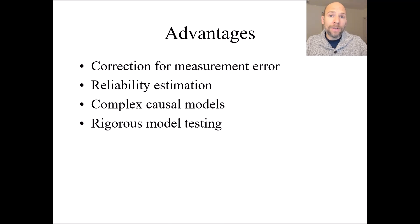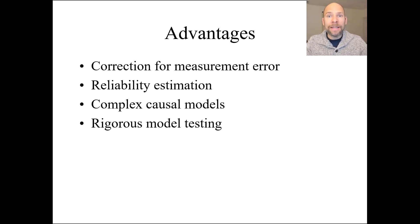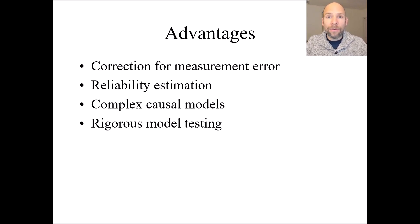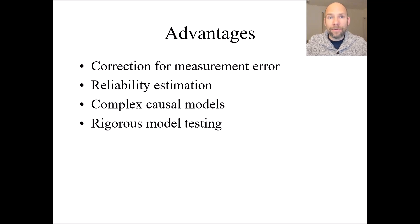SEM also allows us to rigorously test our models. Typically in structural equation modeling we have over-identified models, meaning models that imply testable restrictions for the observed covariance and/or mean structure of the variables. Models can therefore be falsified — rejected according to a chi-square test of model fit. SEM allows us to rigorously test our theories by fitting a theoretical model to observed data and testing it with a chi-square test to see if the model is acceptable or must be rejected.